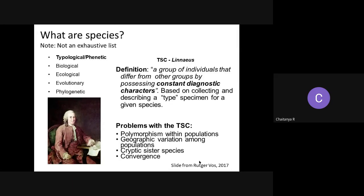One of the first concepts was propounded by Carolus Linnaeus — the phenetic or typological concept. He said that a group of individuals differs from other groups by possessing constant diagnostic characters. He encouraged defining and describing species based on a type specimen or type series for each species — that's why it's also called the typological concept.